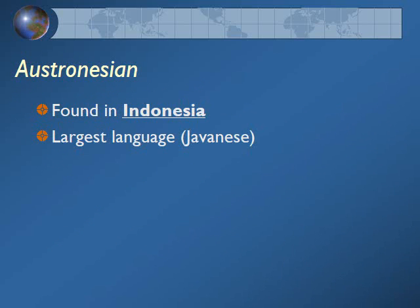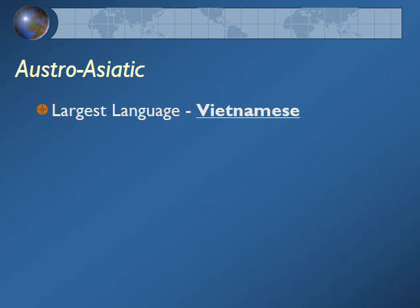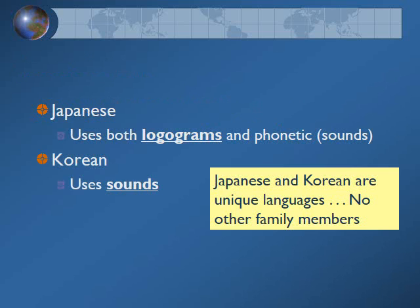Austronesia is another language family found in Indonesia, and the largest language in this family is Javanese. In the Austro-Asiatic family, the largest language spoken is Vietnamese. Japanese and Korean are interesting in that they don't have branches — Japan is its own unique family group and Korea is its own family group as well. Japanese does use some logograms but also mixes in some phonetics, while Korean follows phonetic sounds. Japanese and Korean are separate from each other and have no other family members.